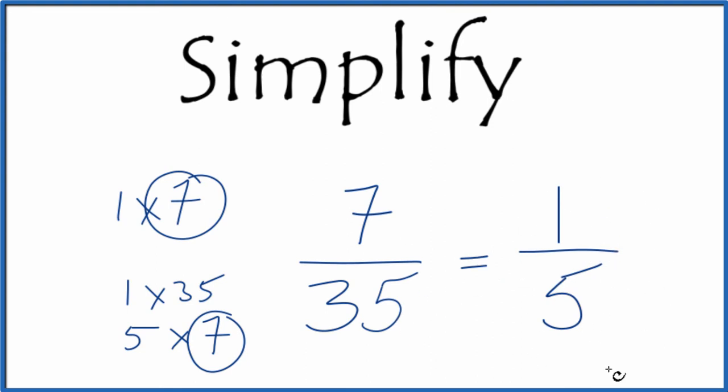You can't simplify this any further. And these are equivalent fractions - 7 divided by 35 and 1 divided by 5 give you the same value. This is Dr. B, and thanks for watching.